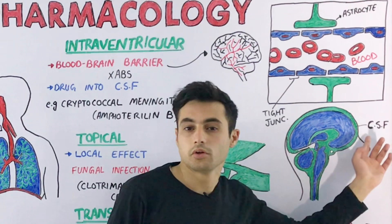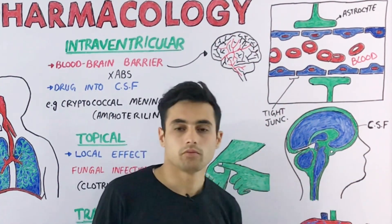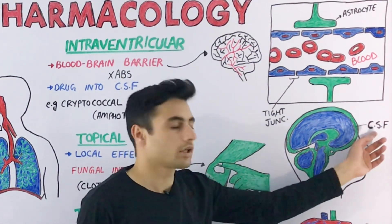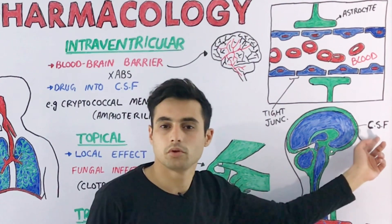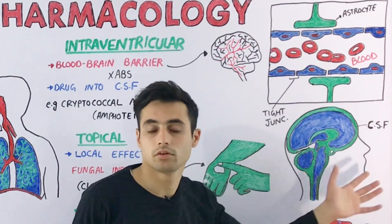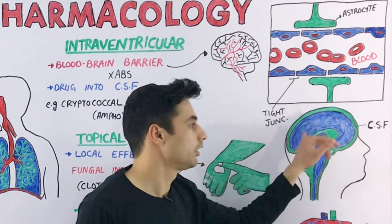The cerebrospinal fluid surrounds your brain, cerebellum, and spinal cord. When you inject the drug into your cerebrospinal fluid, the drug is administered directly into your brain because the cerebrospinal fluid and cerebrum are in direct contact.